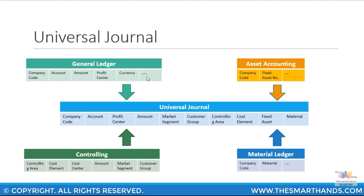In fixed asset accounting you have your fixed asset number, sub-number, and so on — these are also copied across to the universal journal table. The material ledger information such as material code and so on is also copied over, as well as your controlling information such as controlling area, cost element, and cost center.